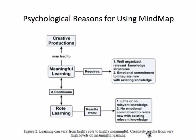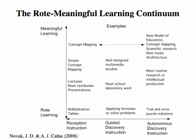Another way to look at why we use mind maps is through the rote-to-meaningful learning continuum. In traditional rote learning, there is little retention of knowledge and no emotional commitment to new or existing knowledge. Whereas if we engage learners in meaningful learning, they will acquire well-organized, relevant knowledge structures and develop emotional commitment to integrate new information with existing knowledge, which may lead to creative production and acquisition of new knowledge.